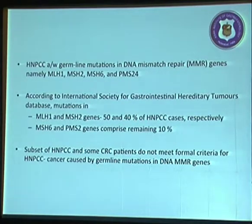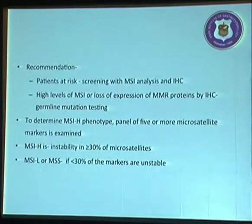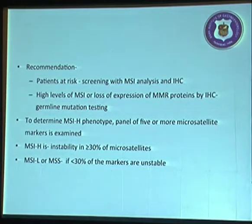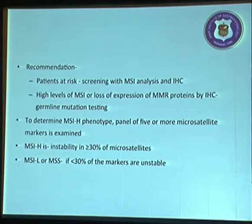Certain genes are associated with HNPCC: MLH1 and MSH2 contribute 50% and 40% respectively, while MSH6 and PMS2 comprise the remaining 10%. The recommendation for patients at risk of HNPCC is to screen with microsatellite instability analysis and immunohistochemical markers. Patients with high levels of microsatellite instability are recommended for germline mutation testing. A panel of 5 markers is routinely used. MSI-high is categorized if instability is present in more than 30% of microsatellites, MSI-low if only one marker is unstable, and microsatellite stable if none are unstable.